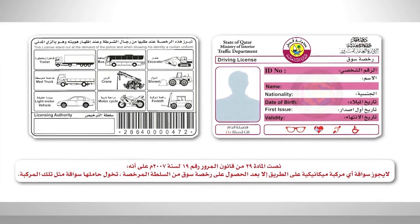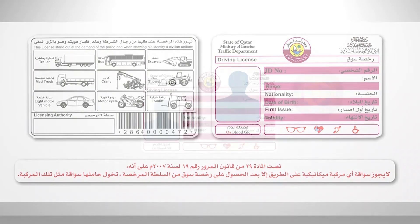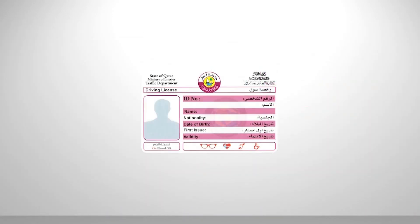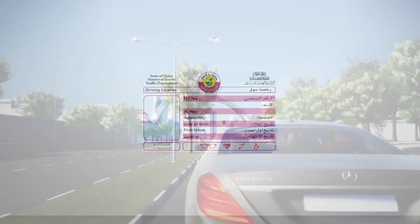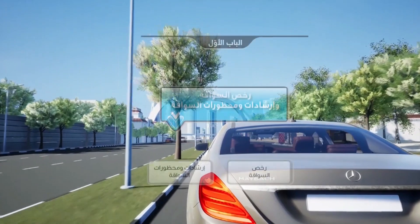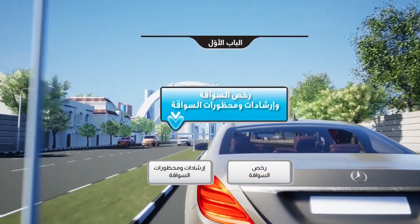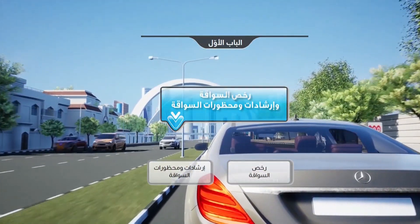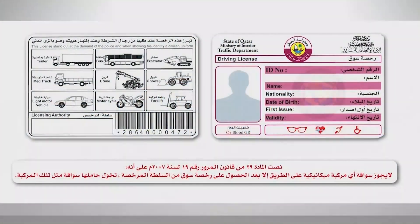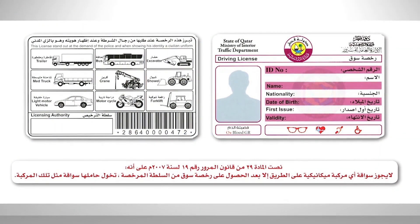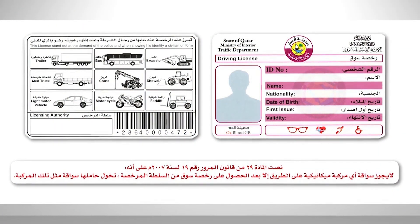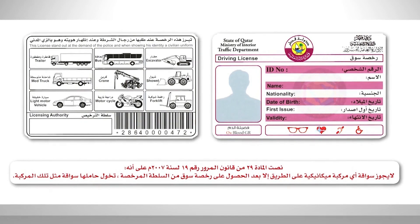First, Driving Licenses. Article 29 of Traffic Law No. 19 of 2007 states that driving of any motor vehicle on the road shall take place only after obtaining a license from the licensing authority, entitling the holder to drive such a vehicle.